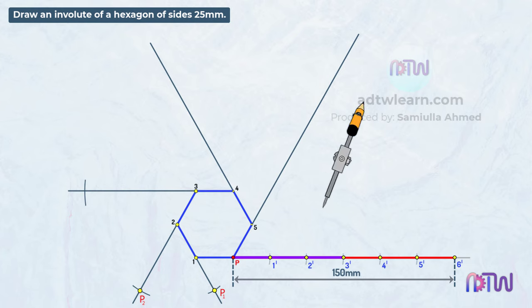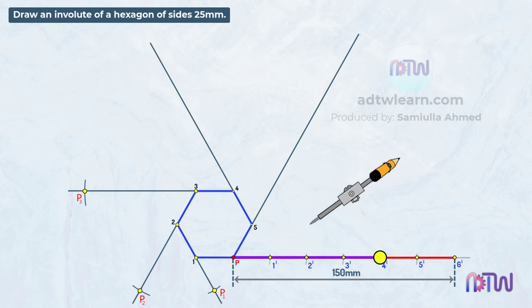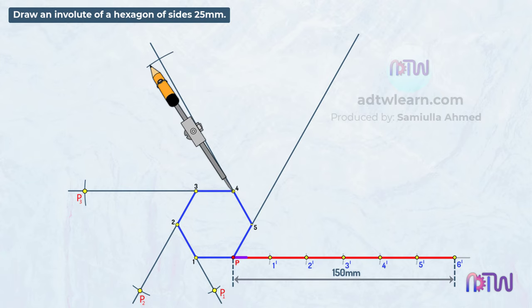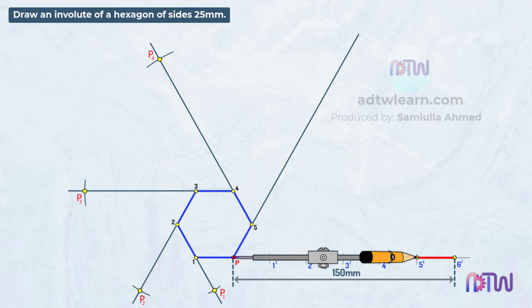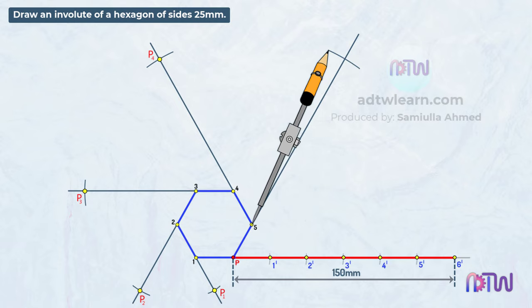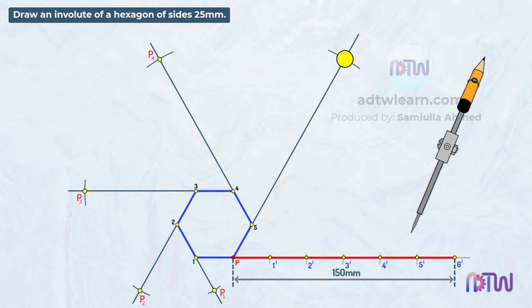Take the distance from point P to 3-dash, using point 3 as a center, mark an arc — mark this point as P3. Similarly, take the distance from point P to 4-dash, using point 4 as a center, mark an arc — mark this point as P4. Take the distance from point P to 5-dash, using point 5 as a center, mark an arc — mark this point as P5. The final point P6 will be at 6-dash. Since we have all the required points, now we can join all these points to get the required involute.